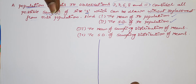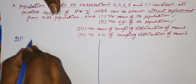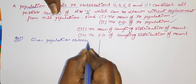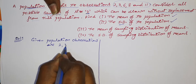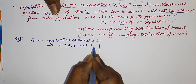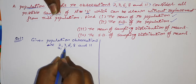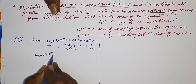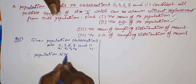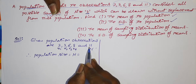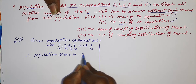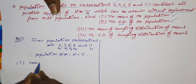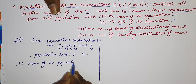First, write the given observations of the population. The observations are 2, 3, 6, 8, and 11 — you can name them x1, x2, x3, x4, and x5. The population size, represented by capital N, is the number of observations, which is 5. Now we find the population mean.